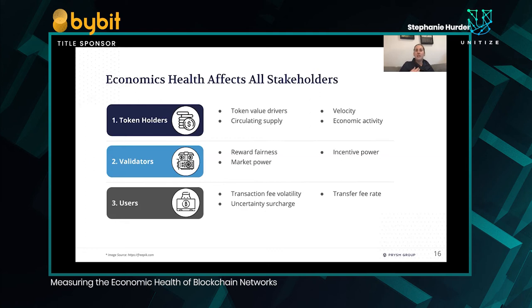When we're thinking about how to measure economic health, we think about the value of the platform to different groups of stakeholders. Obviously token holders get lots of attention, but there are also validators: are validators being rewarded fairly for their contributions? Does any particular validator have excessive market power? Are the incentives strong enough to keep and attract validators who add security to your project? And then for users — if I'm using a token as a means of payment, how convenient is it to send money? How much am I paying in fees compared to the amount I'm sending? Are fees excessively volatile? These all materially impact whether people find value in using a particular blockchain project.